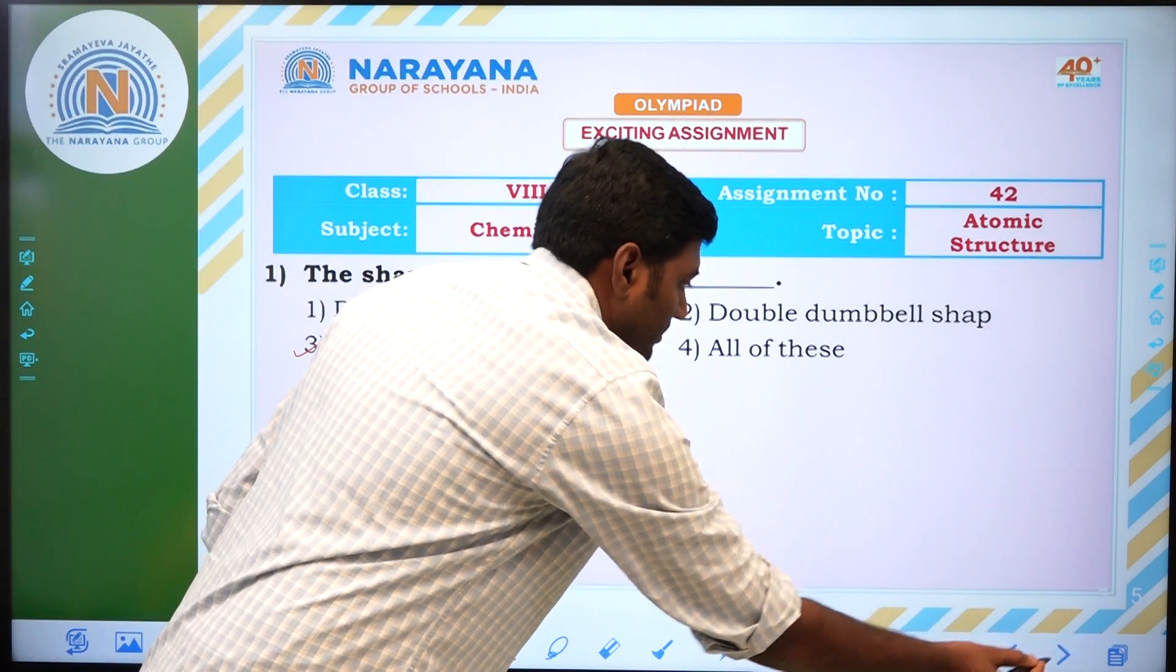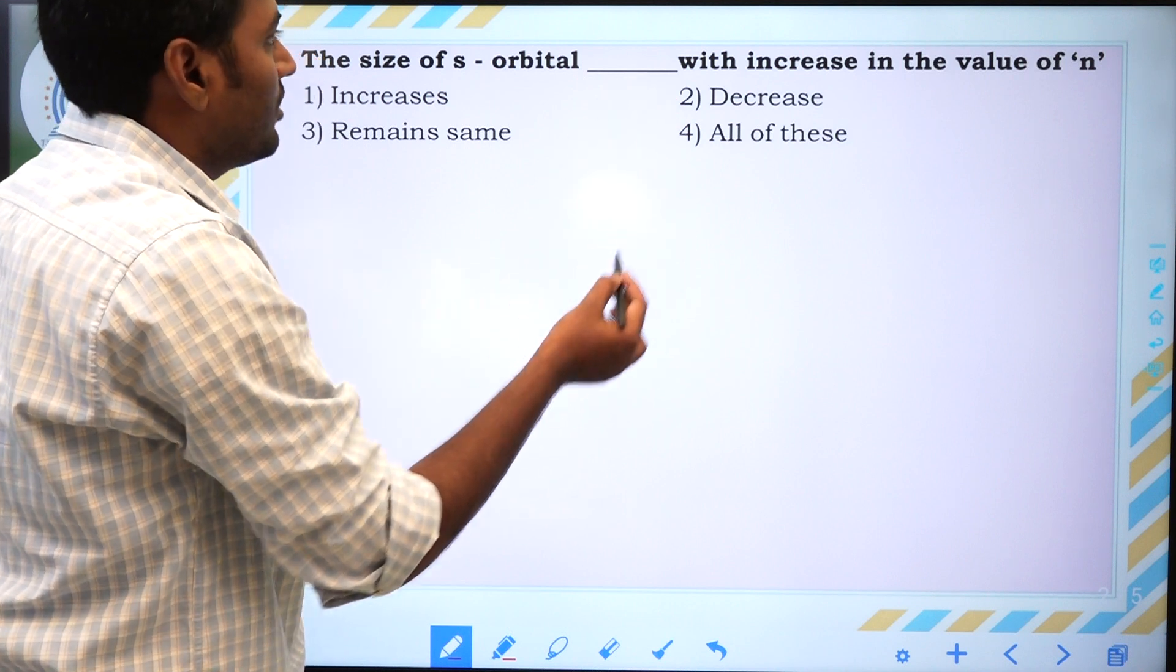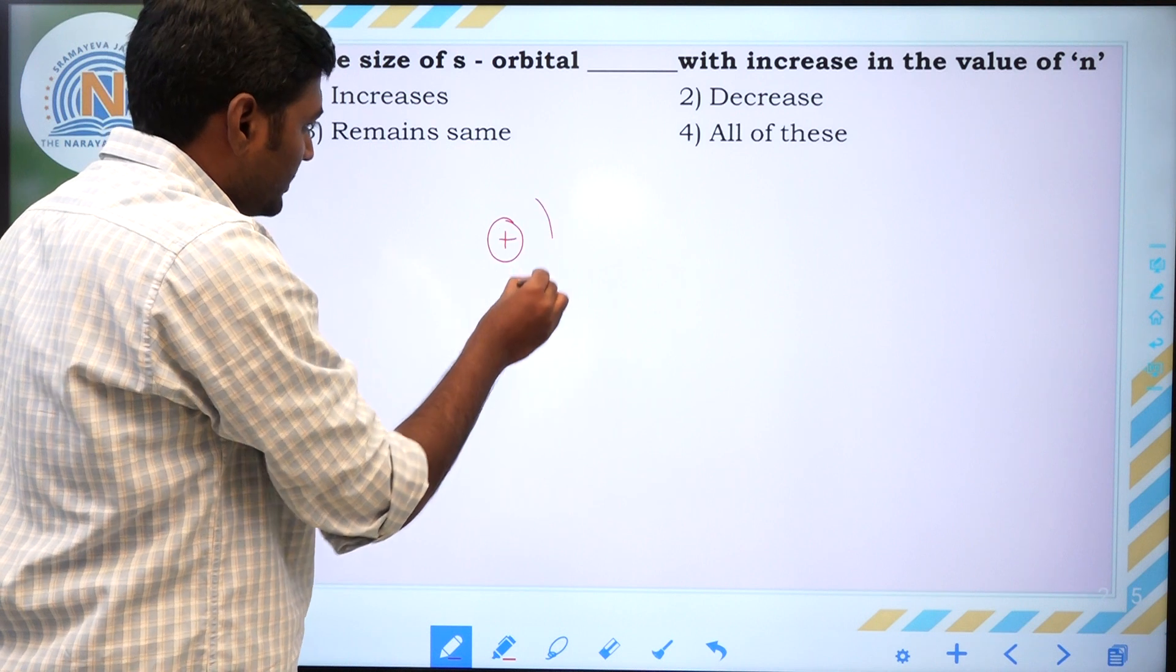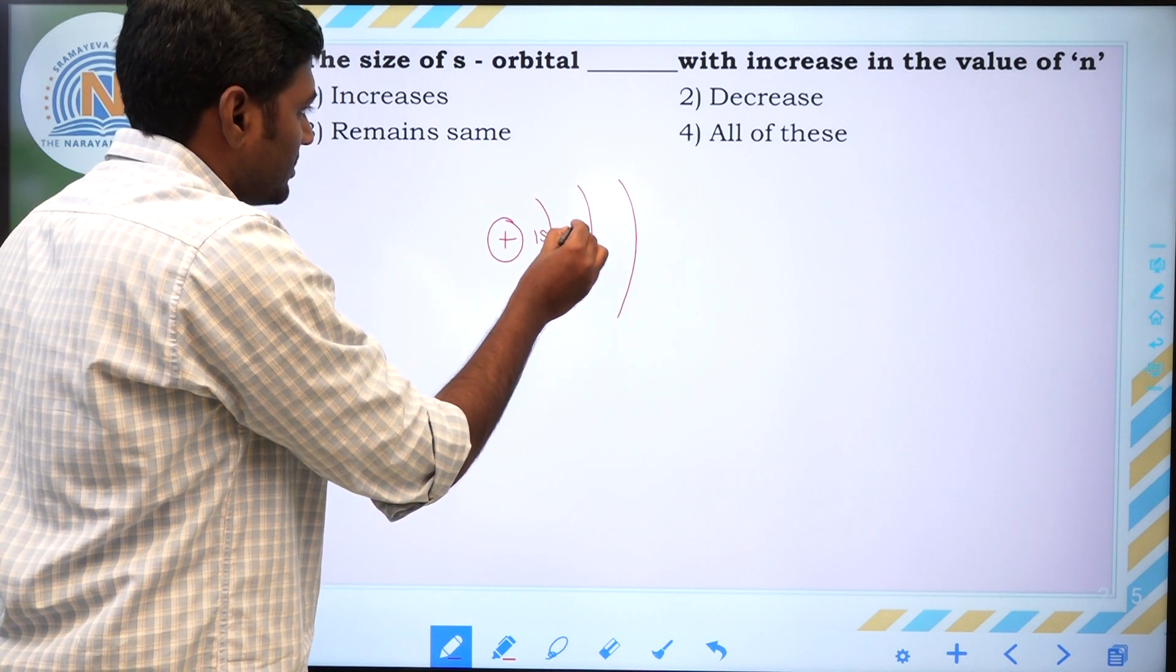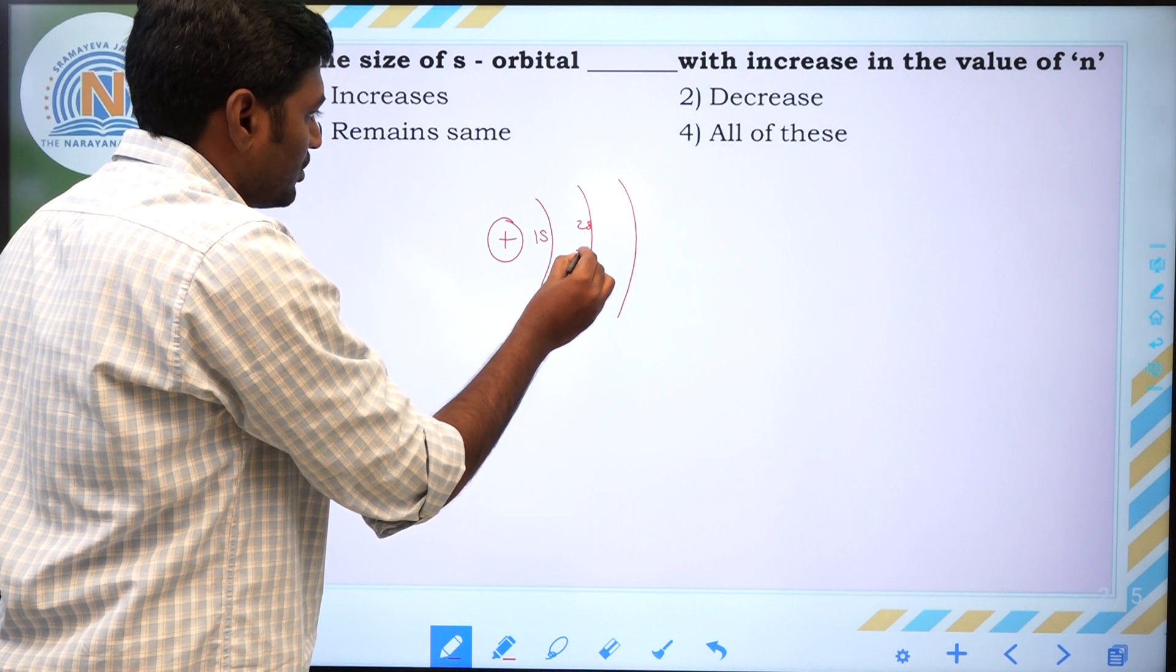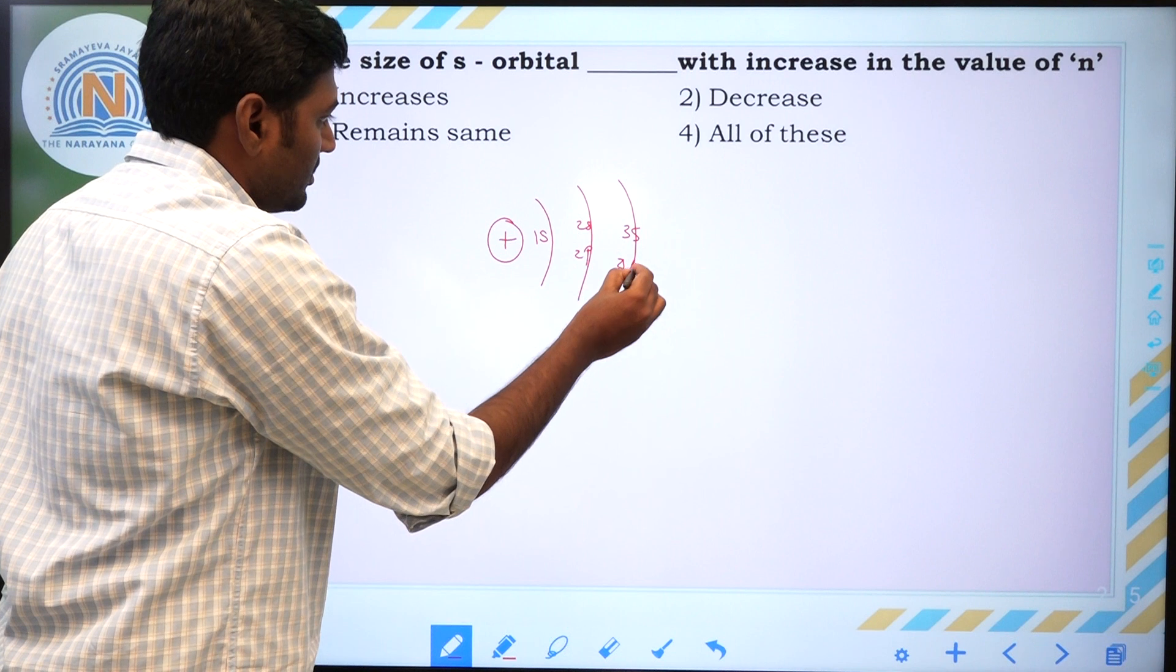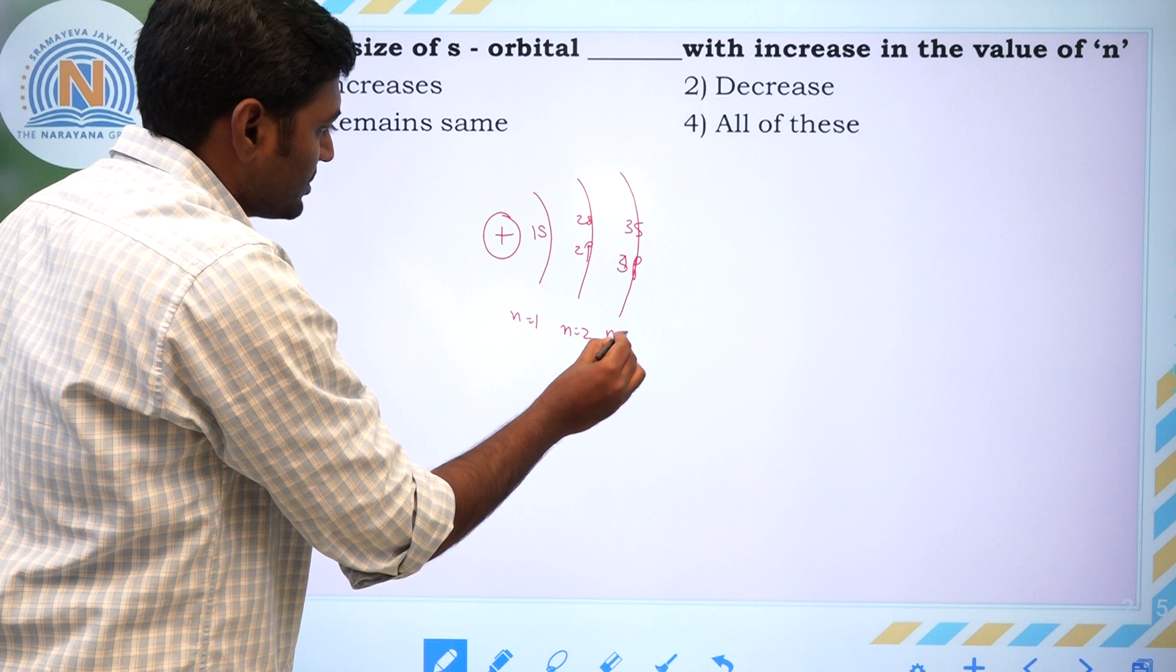We will go for next. The size of S orbital dash with increasing the value of N. First of all, if you take orbitals, it contains 1S, 2S, 2P, 3S, 3P. It means N value is 1, N value is 2, N value is 3.